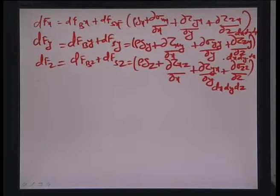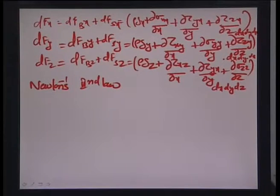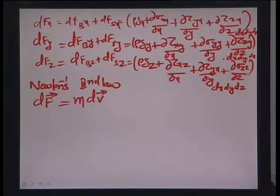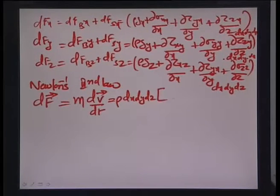From Newton's second law, the total force on the control volume is m times dV/dt, the mass of the control volume times the rate of change of velocity of the particle at point P. This can be represented as rho dx dy dz times the material derivative of velocity. We assume rho does not vary with time, essentially the incompressible case.